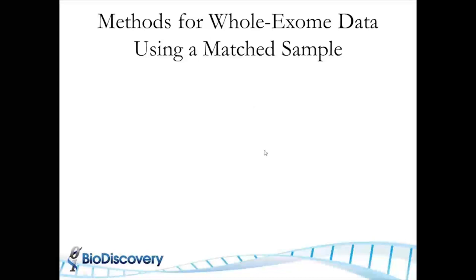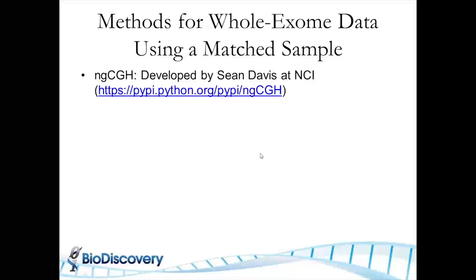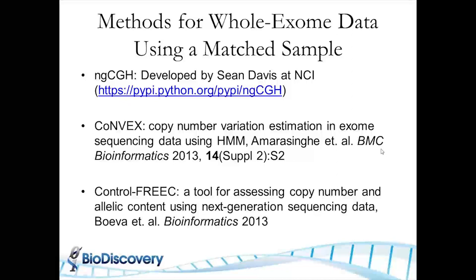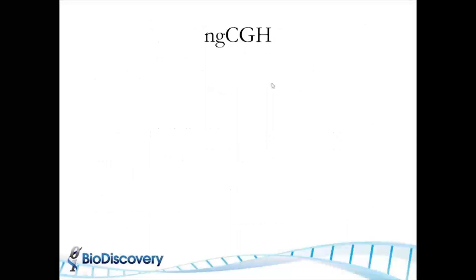Before proceeding, I wanted to talk about some methods for whole exome that can be used for matched samples. One of the simplest early methods was NGCGH, developed by Dr. Sean Davis at the NCI. There's a Python script for this that you can run yourself and generate log ratio values. There's also an algorithm called Convex — in fact there are two algorithms both called Convex: one from a group in Singapore using a hidden Markov model and wavelet-based processing, and the other from the Sanger group. And then there's an algorithm from a French group called ControlFreak, which uses a matched sample or tries to create a reference by itself if you don't have one.